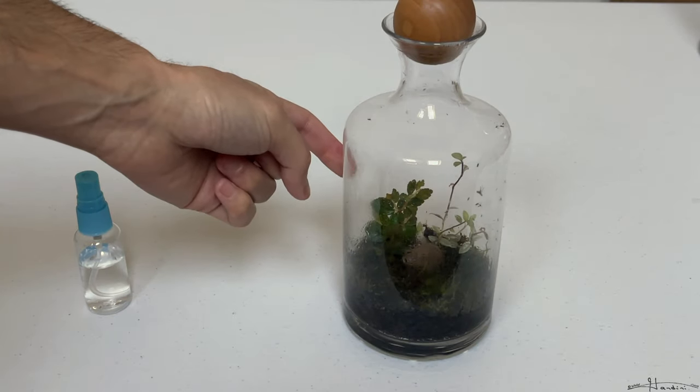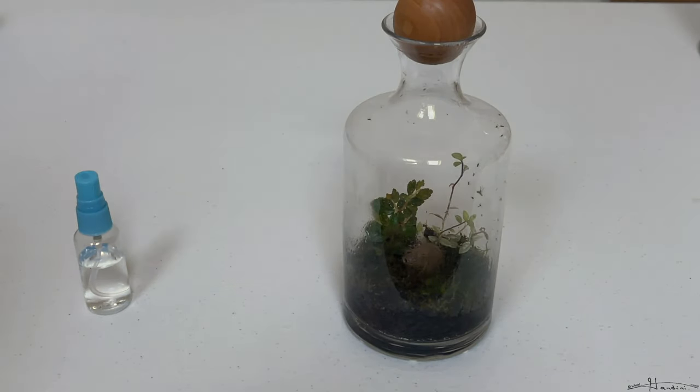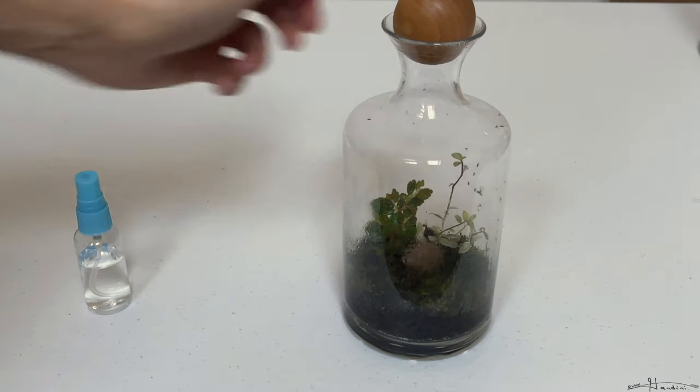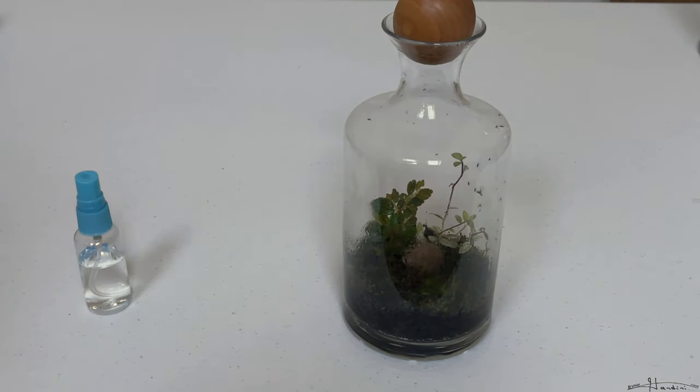But you can see that this begonia foliosa is starting to do well. It looks happy. The miniature wandering Jews, I do need to tend to them a little bit. They're getting a little stringy even though they were on a west-facing window.